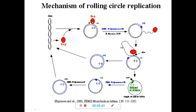When a nick is formed on the single-stranded DNA, you get a 3' OH and a 5' phosphate. The Rep A protein binds to the 5' phosphate of the nicked DNA, and DNA polymerase III comes and binds to the 3' OH, starting DNA synthesis. Helicases and other unwinding enzymes come and pull the parent strand — the template — from the Rep A region.